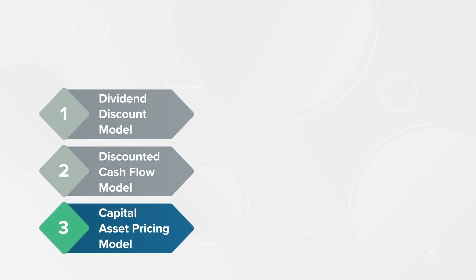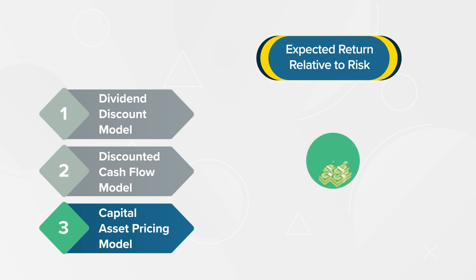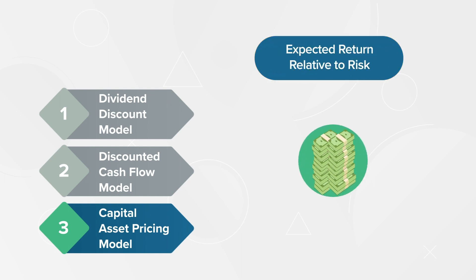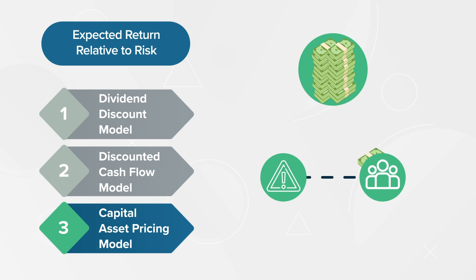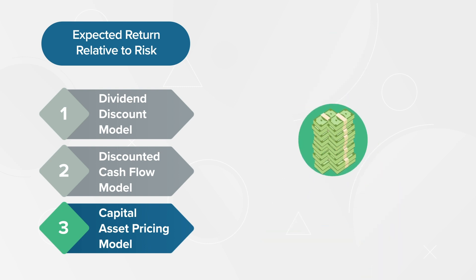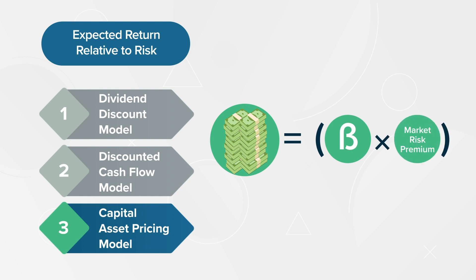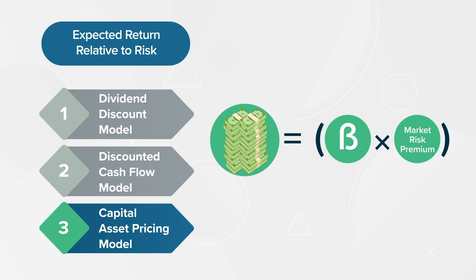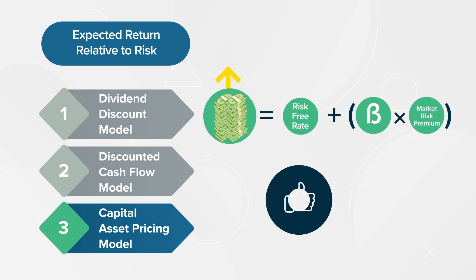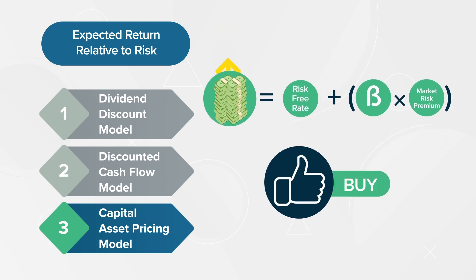The Capital Asset Pricing Model, or CAPM, calculates the value of a security based on expected return relative to the risk investors incur by investing in that security. To calculate the value of a stock using CAPM, multiply the volatility, known as beta, by the additional compensation for incurring risk, known as the market risk premium, then add the risk-free rate to that value. For each additional increment of risk incurred, the expected return should proportionately increase. If a security is found to have a higher return relative to the additional risk incurred, then the CAPM model suggests that it is a buying opportunity.